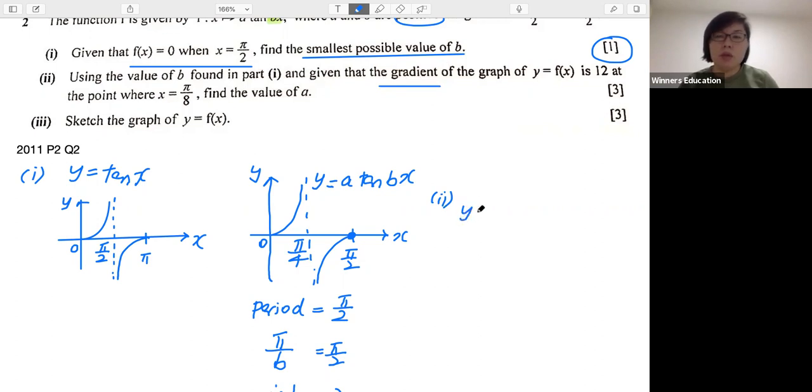So the equation will be y equals a tan, and b we have found it to be 2, so 2x. The gradient therefore will be y prime. And what is y prime? Y prime means differentiate a tan(2x). Now, when we differentiate trigonometry, you need to take care of two things. Number one,